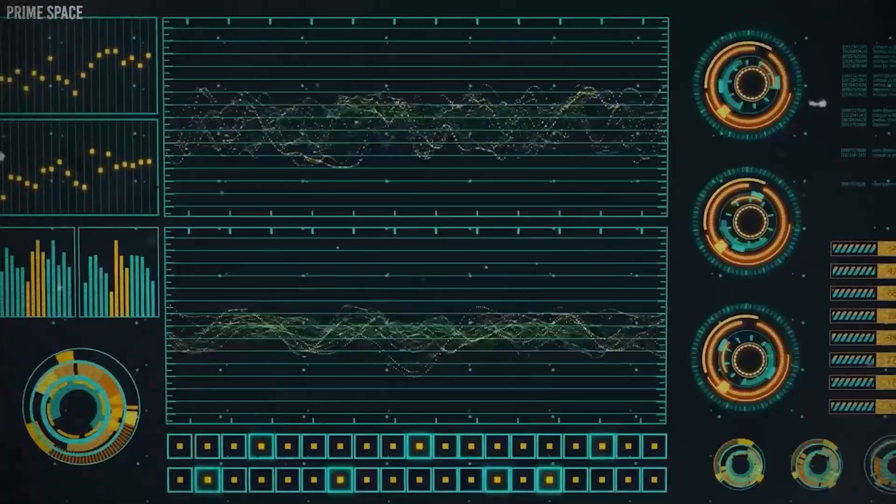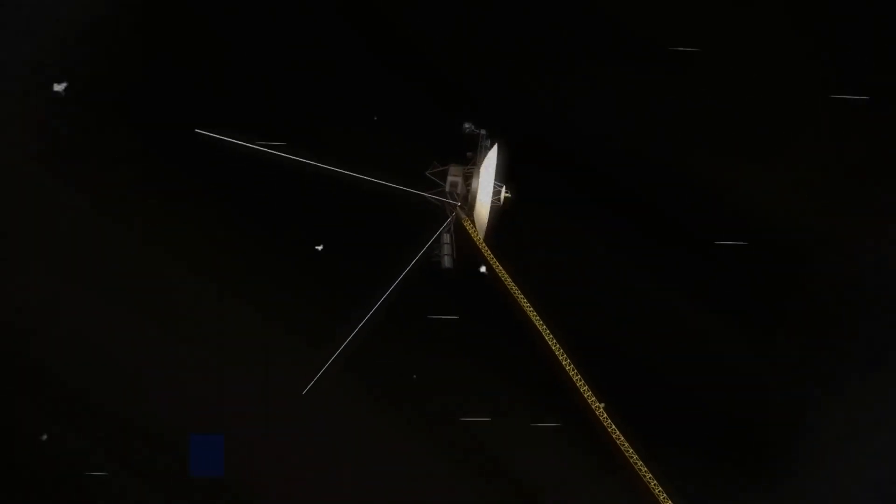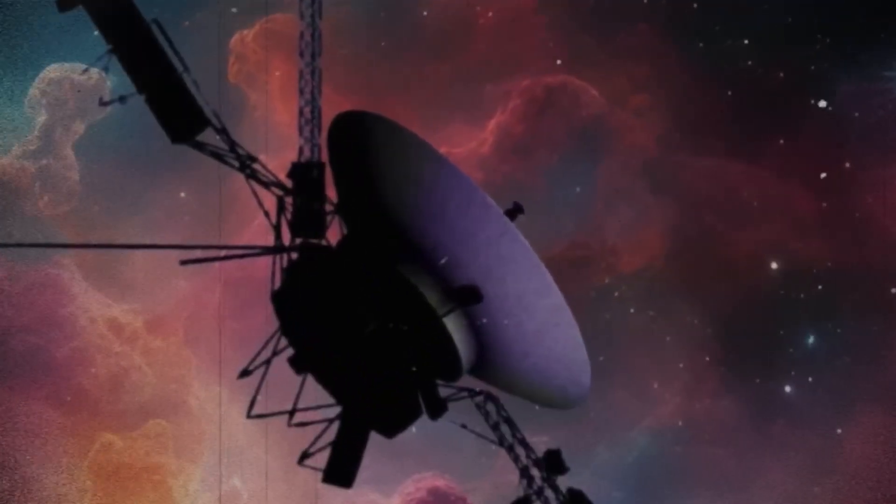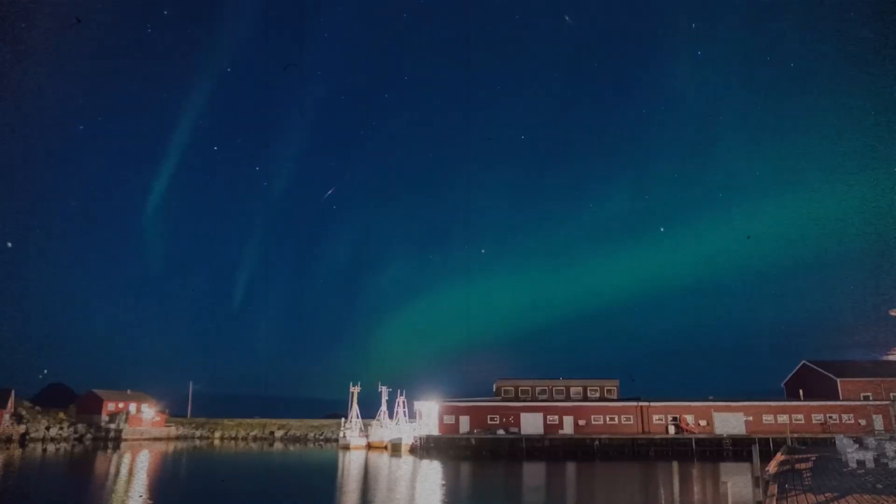NASA is also planning for future problems such as thruster valve blockages. The Voyagers use small thrusters to maintain their orientation for communication.